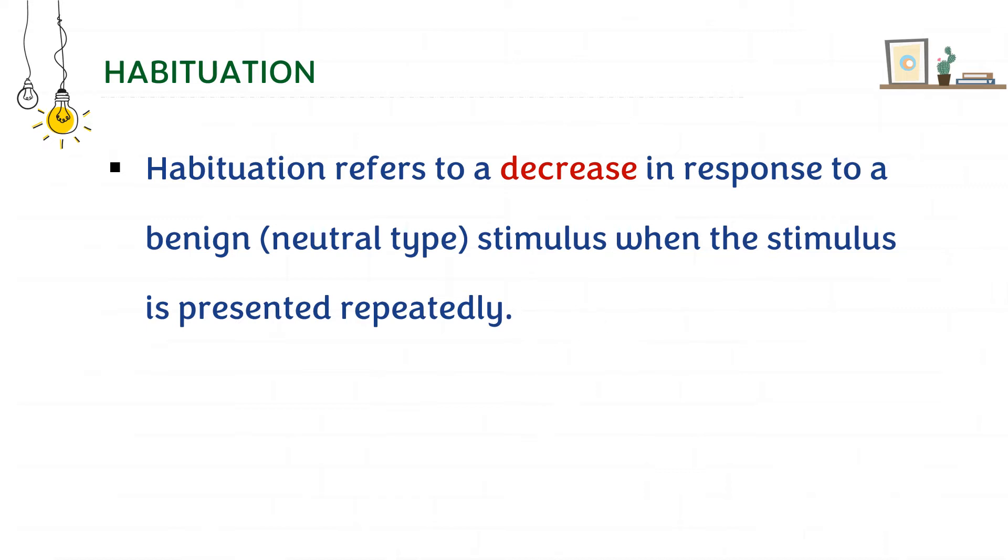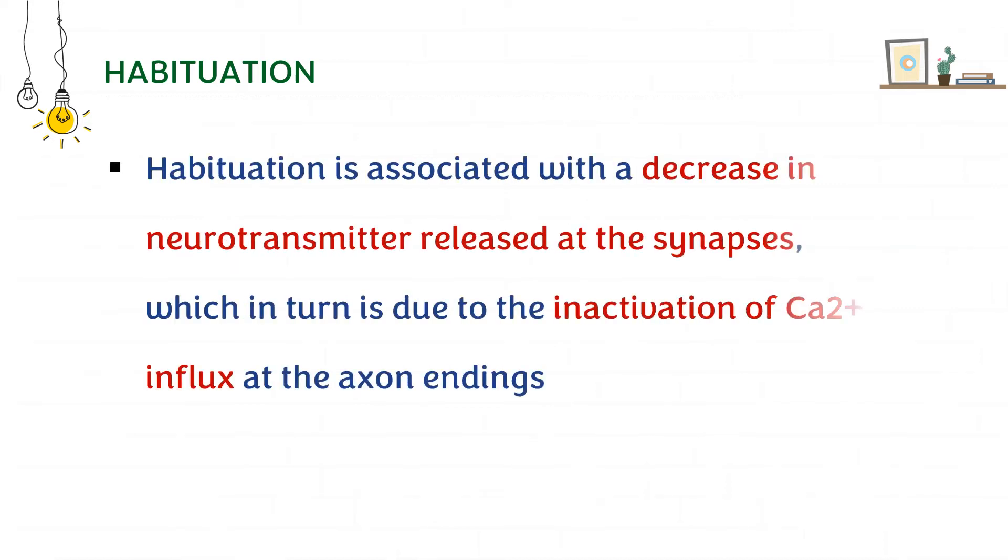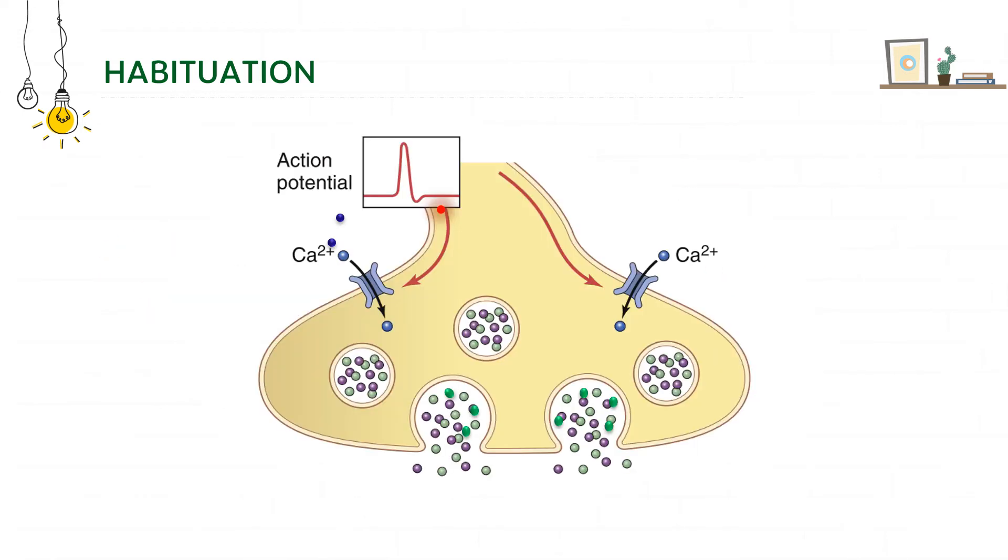So what is the mechanism of action? It is associated with a decrease in neurotransmitter released at the synapses. Here is a small diagram which shows the working of a synapse. We know that this is a neuron and this is the end which has neurotransmitters. When an action potential moves down this neuron, there will be opening up of calcium channels which in turn will lead to release of the neurotransmitters at the junction.